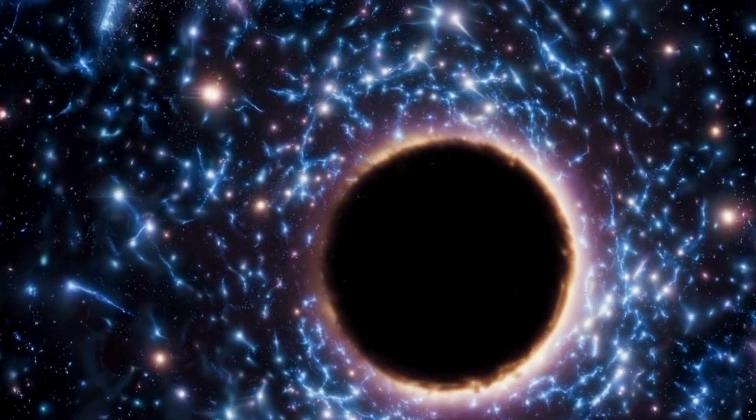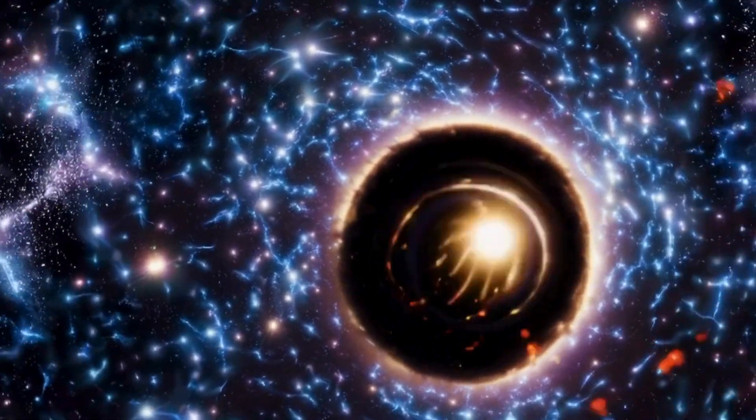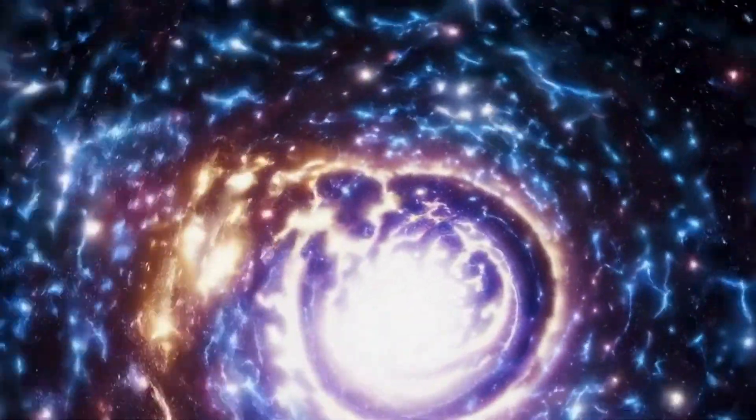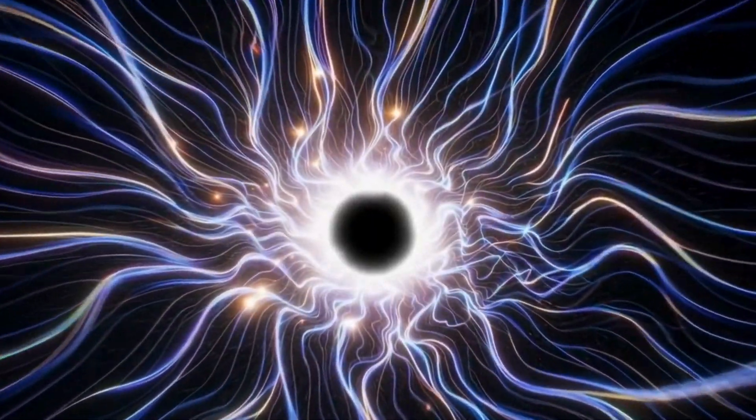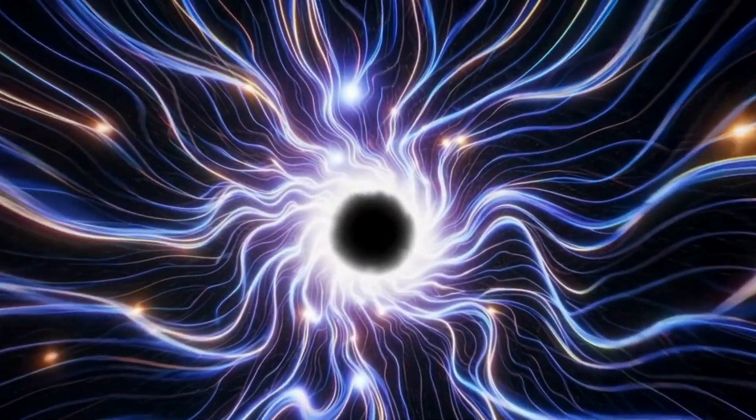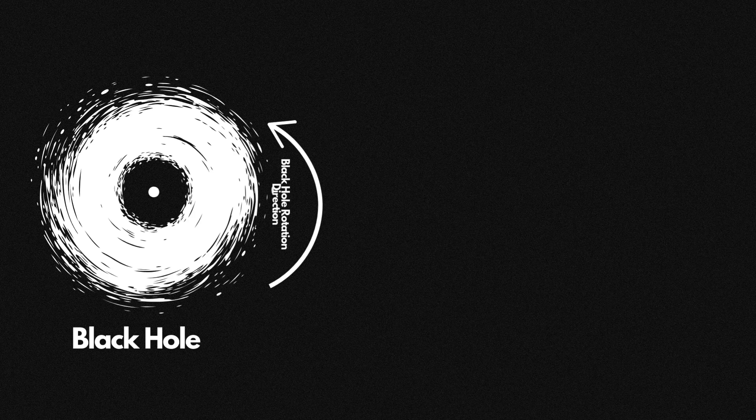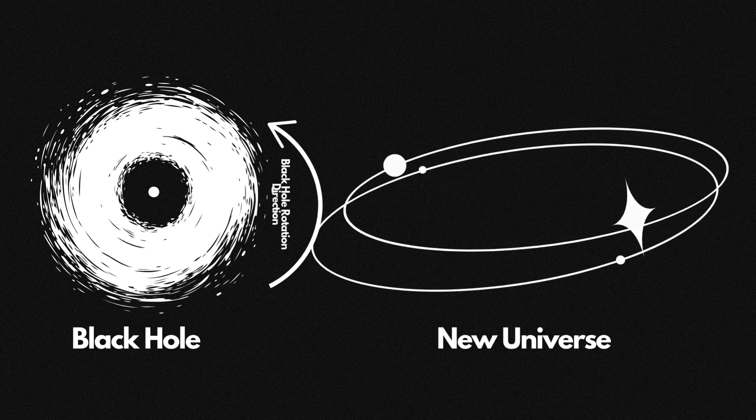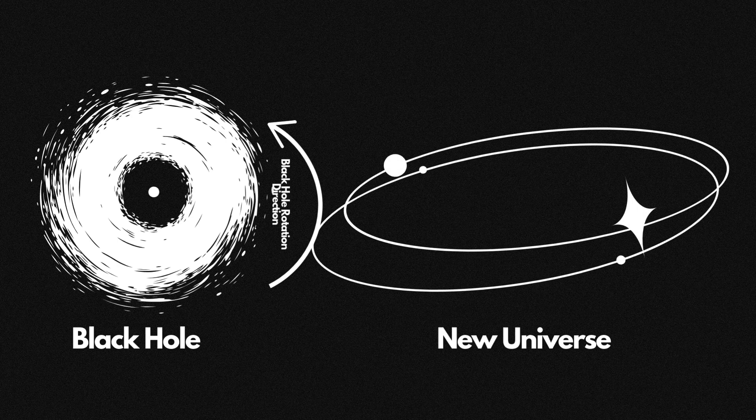If our universe is inside a black hole, or if the Big Bang resulted from a black hole transitioning into a white hole, then this new universe would inevitably inherit a rotational axis from the original black hole. According to Poplosky, the asymmetric galactic rotation detected by James Webb could be a relic of the black hole's original spin direction.